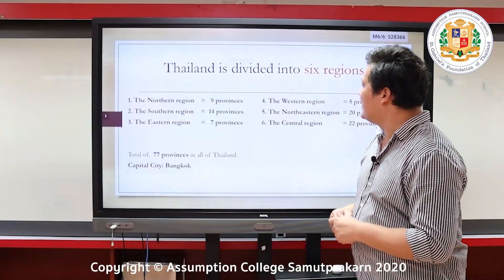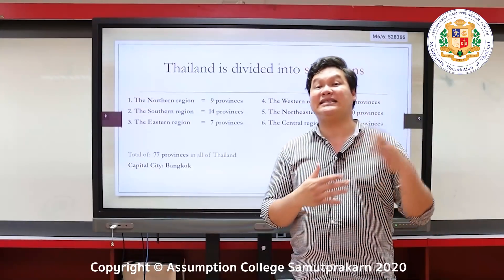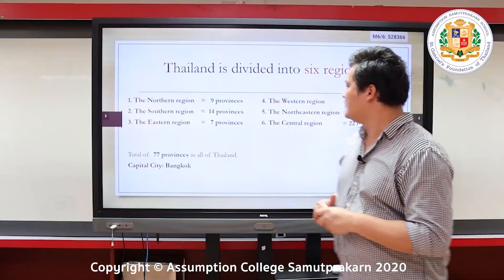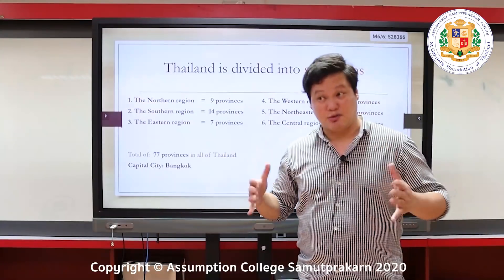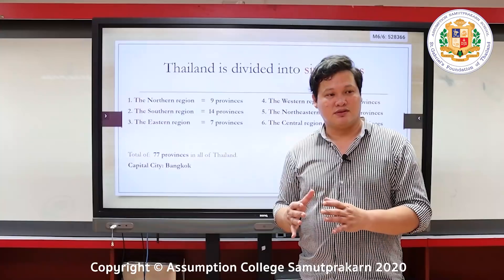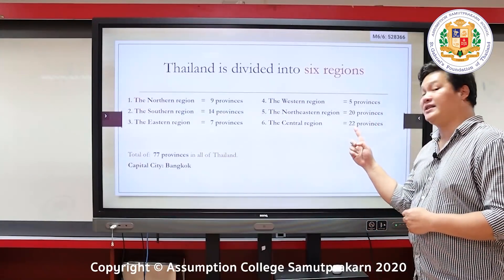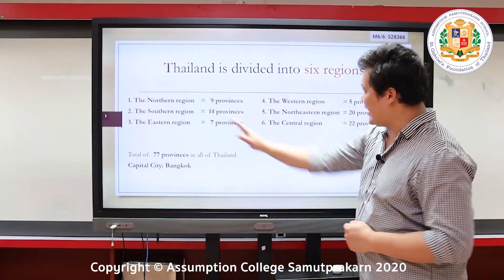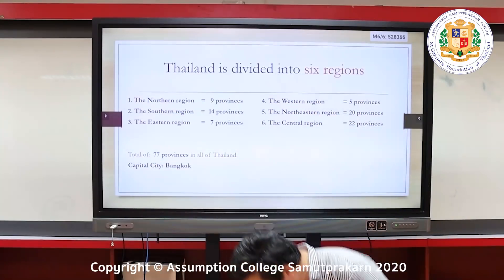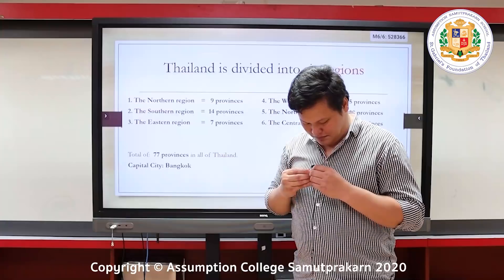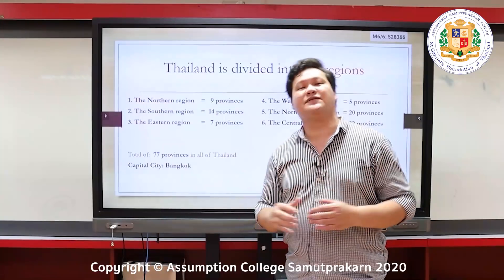The fifth region is the northeastern region, or the Isan region, which has 20 provinces. And finally, the central region, where Samut Prakan is, is in the central region. They have the most number of provinces: 22. So if you add up all together — 9, 14, 7, 5, 20, and 22 — there will be a total of 77 provinces in all of Thailand.